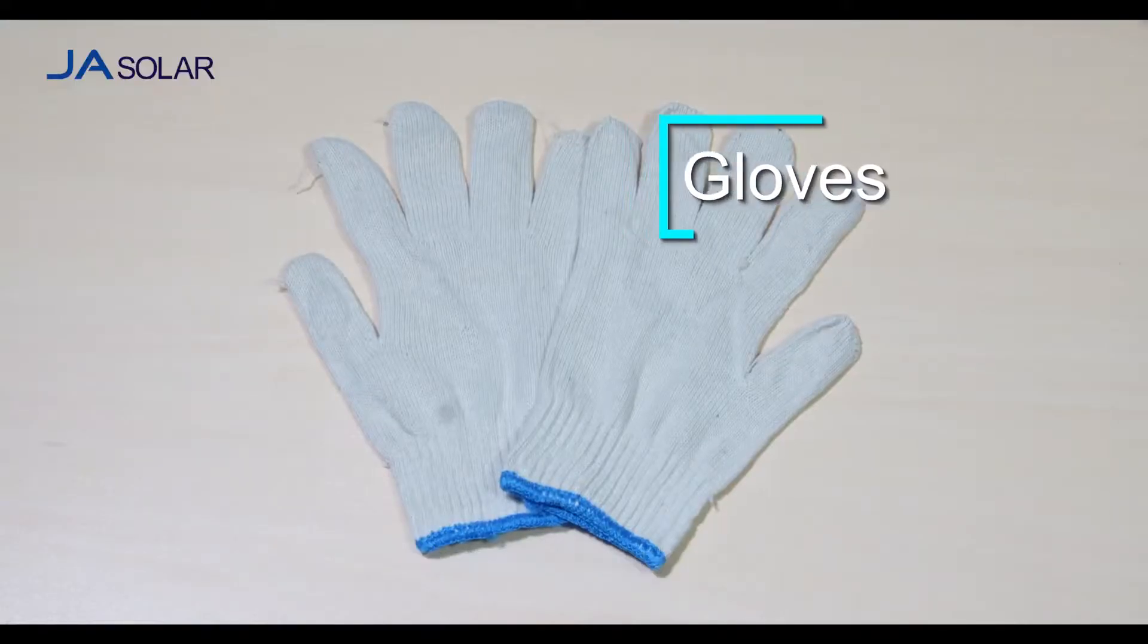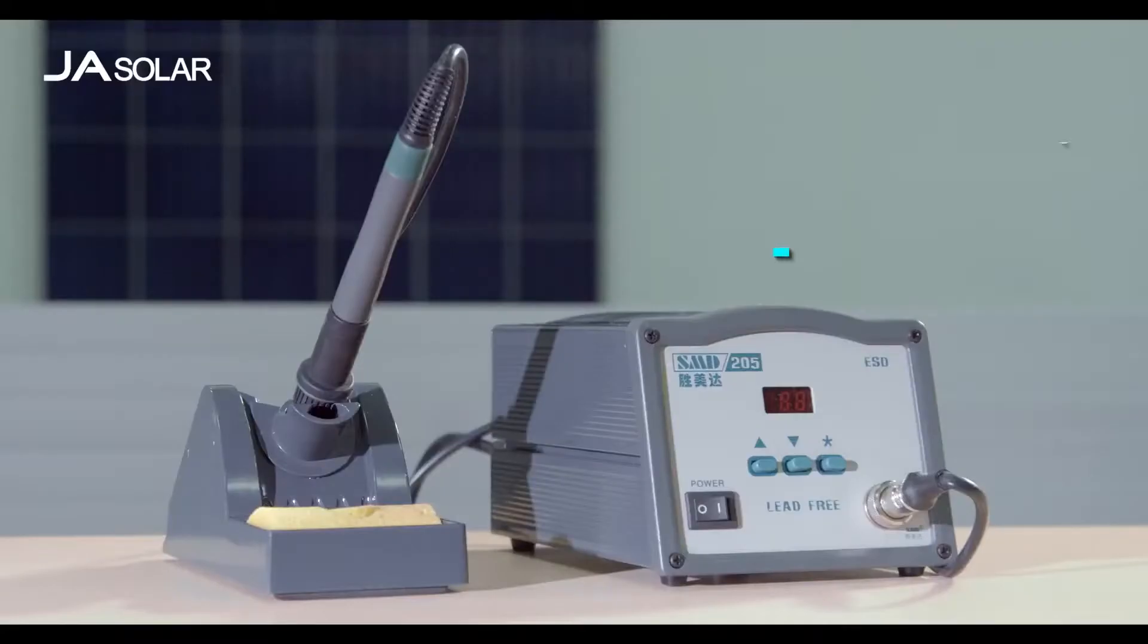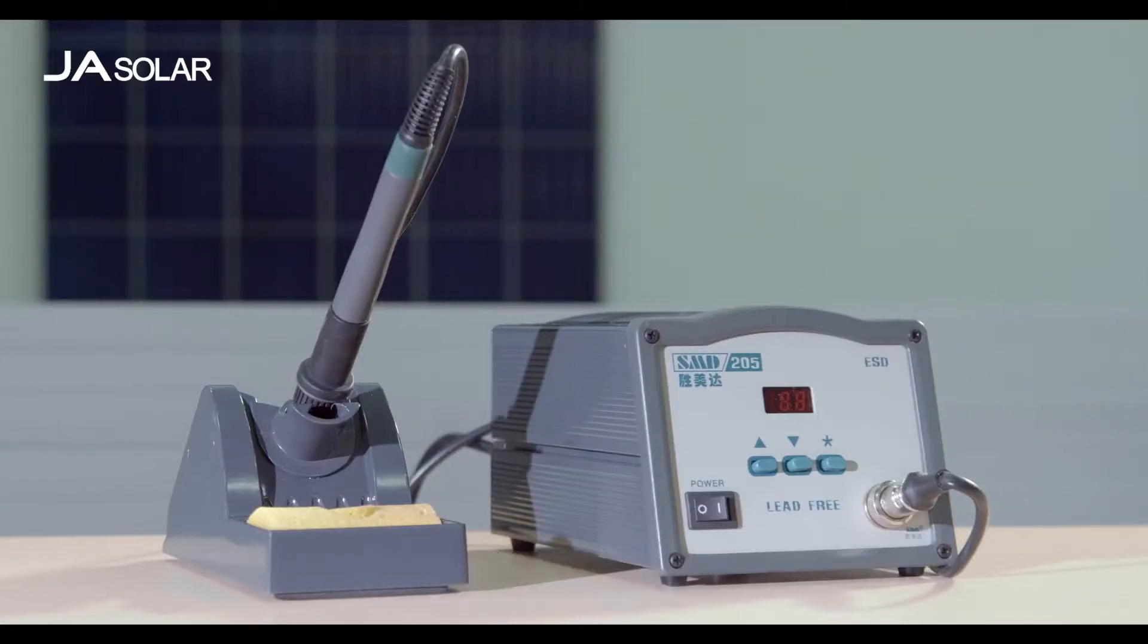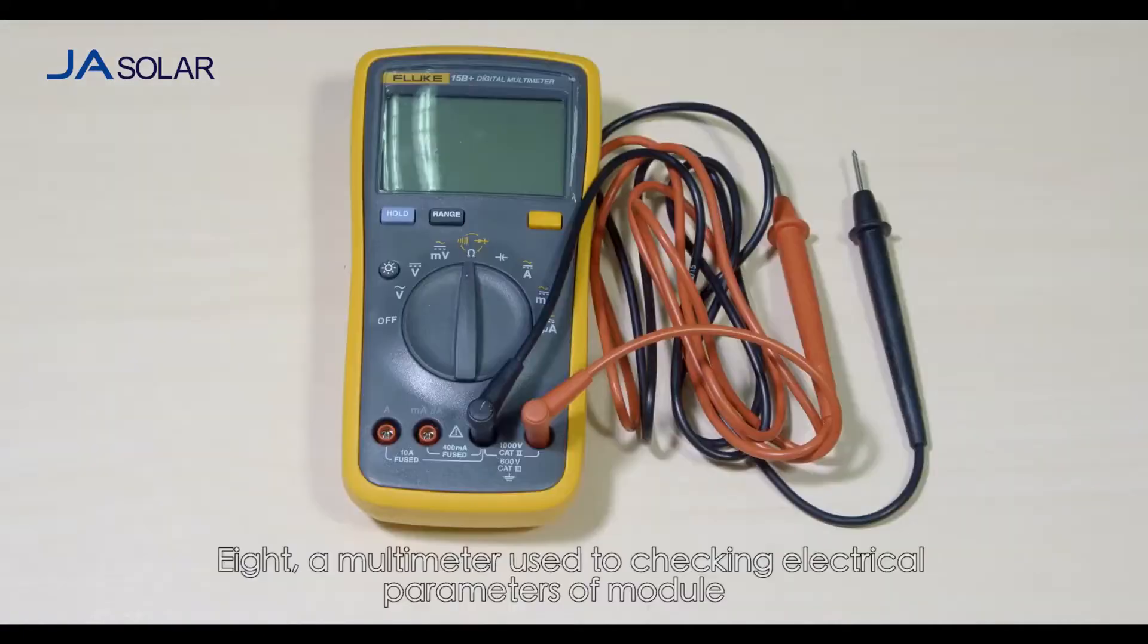Fourth, a pair of gloves. Fifth, a gluing gun. Sixth, a temperature constant electric soldering iron for soldering ribbon. Seventh, a pair of needle nose pliers.